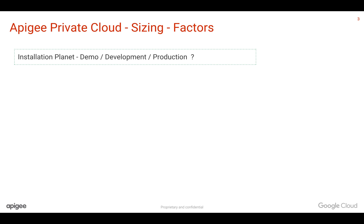The first factor is Installation Planet — whether you are installing Apigee in a demo environment, a development environment, or a production environment. Based on that, the number of nodes and the hardware required for each virtual machine is going to be different. So you need to consider which environment you are setting up.